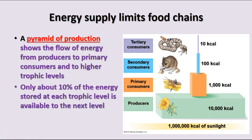A pyramid of production shows energy flow from the producers to the primary consumers and higher levels. Starting with one million kilocalories of sunlight shining on the plants, the producers store about 10,000 kilocalories of energy. The primary consumer will transfer about 1,000 calories of those 10,000 to its systems. The secondary consumer gets only 100 calories, and the tertiary only 10 calories. So only about 10% of the energy at each trophic level is available to the next level — this is called the rule of 10%.